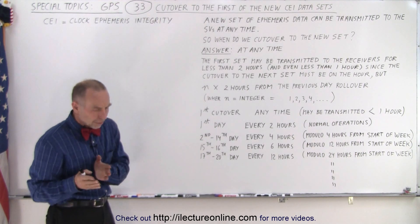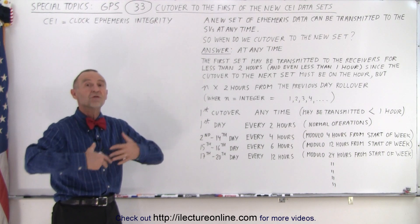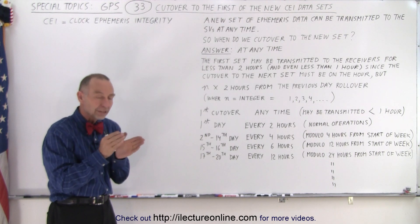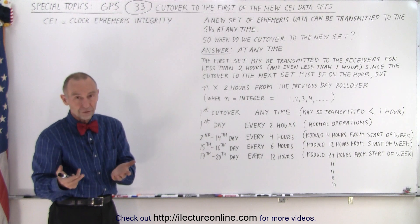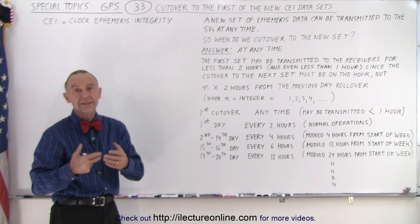So when do we cut into a new set? Because obviously the ideal thing would be to every day or so set up a new set of ephemeris data so that all the data that is being used by the receivers that they receive from the SVs is very accurate. That's the ideal situation.